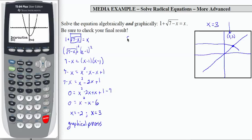This one only gave me one. So let's see what happens algebraically when I check. If I check x equals negative 2, what I'm going to do is put negative 2 into the left side and then see if I get negative 2 on the right. So I would say 1 plus the square root of 7 minus negative 2. And that equals 1 plus square root of 9, 1 plus 3 and that equals 4.